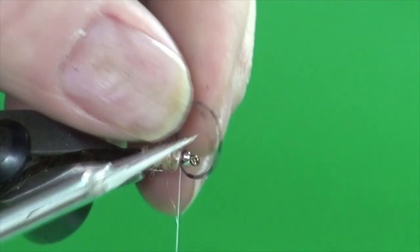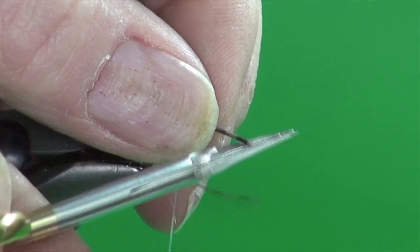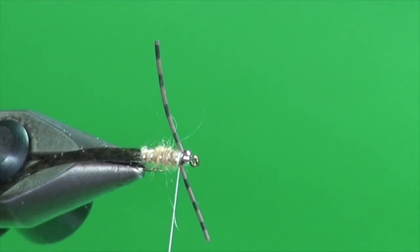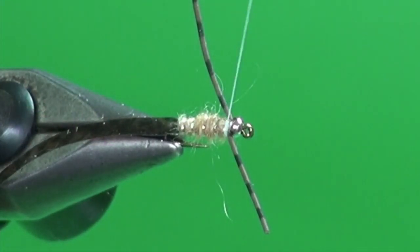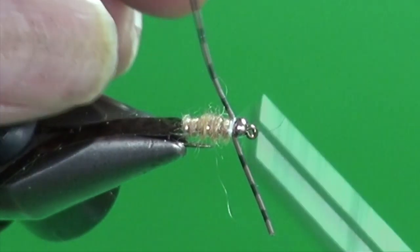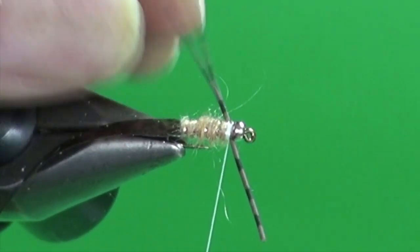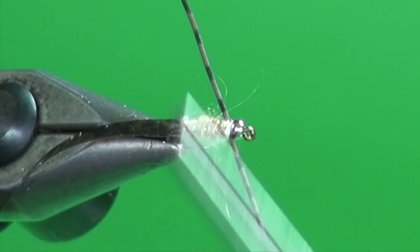So we're going to come in now and just trim about the midsection of this loop and free it up. And those legs are way longer than we need. So I'm going to bring my tying thread back up behind the bead and secure the far leg so it points backwards.